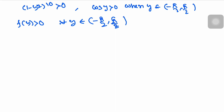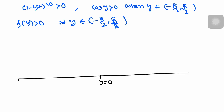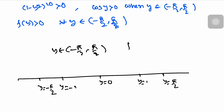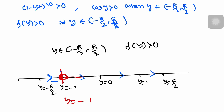Let's draw the phase line: y = 0, y = 1, y = π/2, y = -1, y = -π/2. When y belongs to (-π/2, π/2), f(y) > 0, so the direction is always to the right. For fixed point y = -1: when y < -1 the direction goes toward the fixed point (stable from the left), but when y > -1 it goes away (unstable from the right). So y = -1 is a half-stable fixed point — stable to the left and unstable to the right.